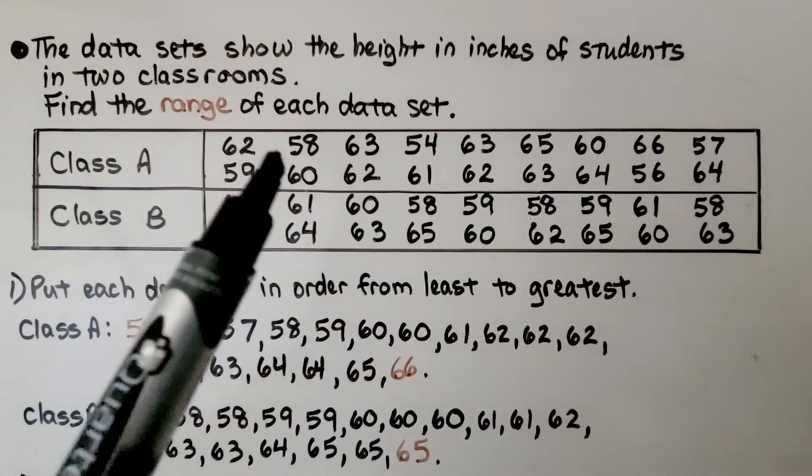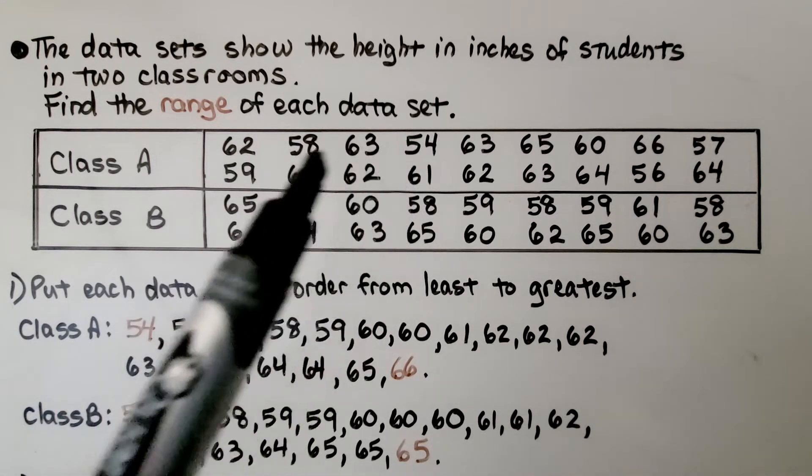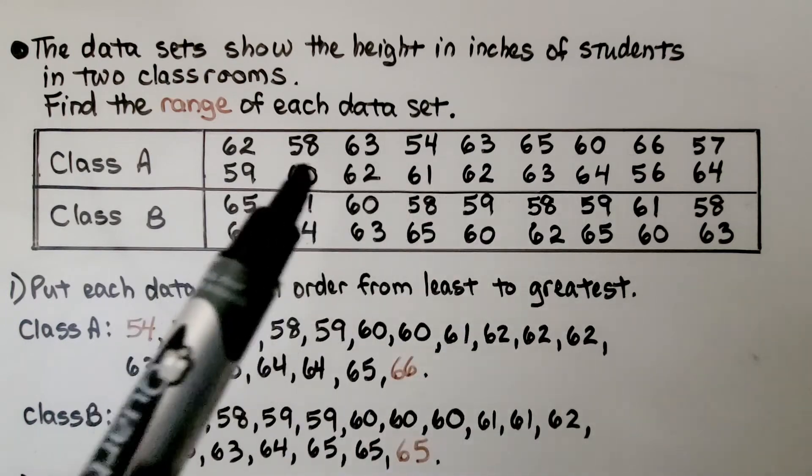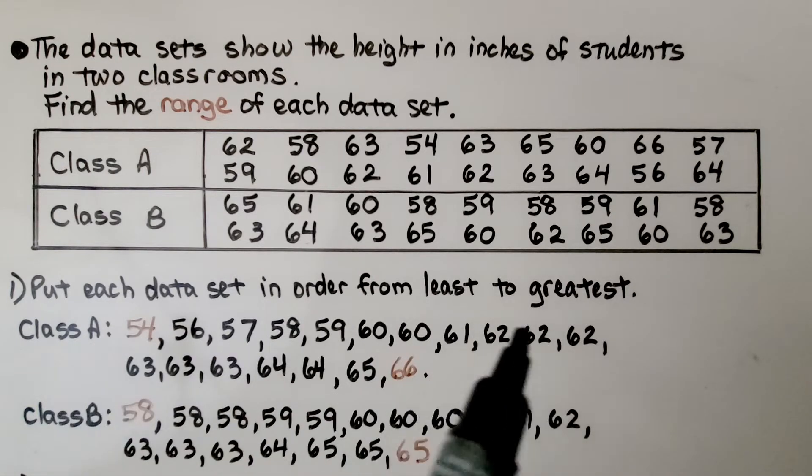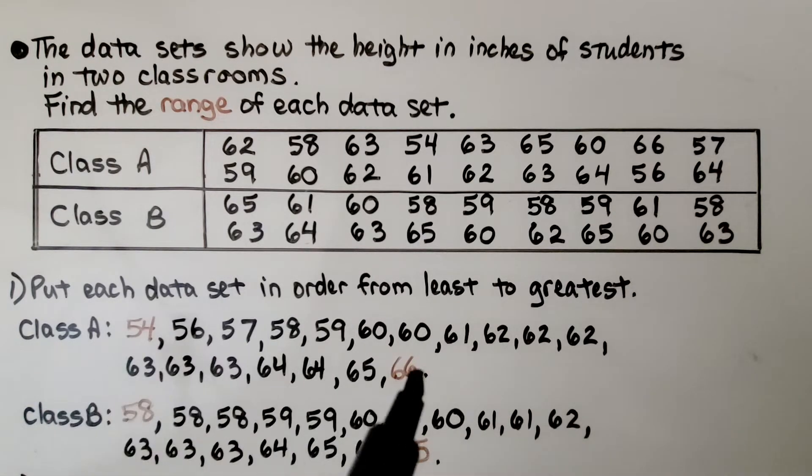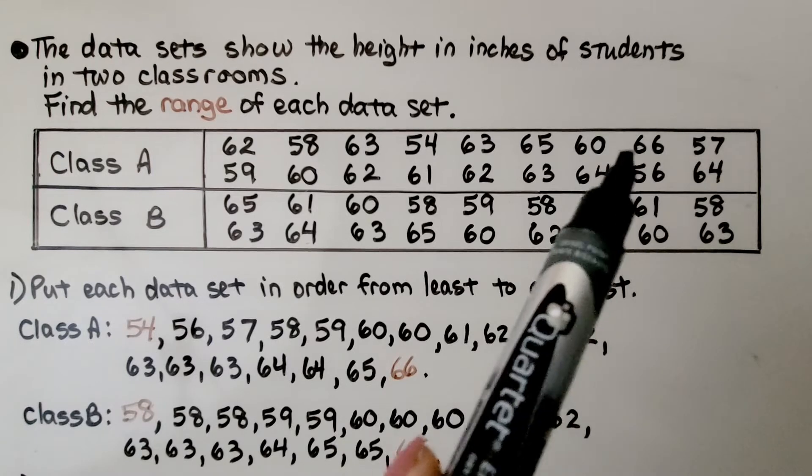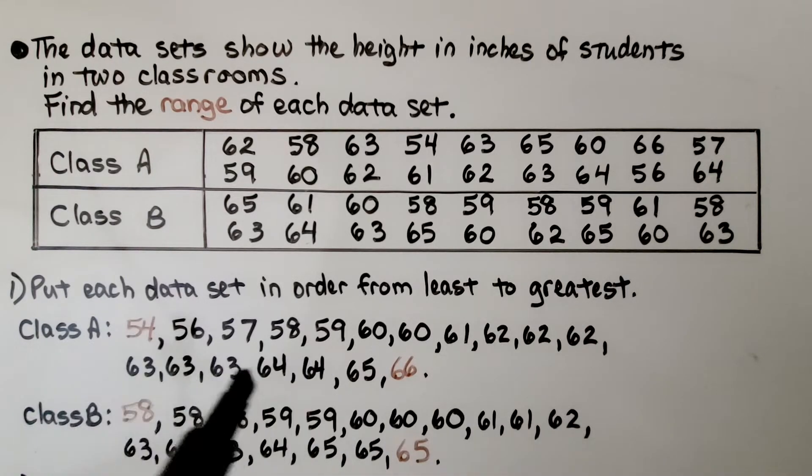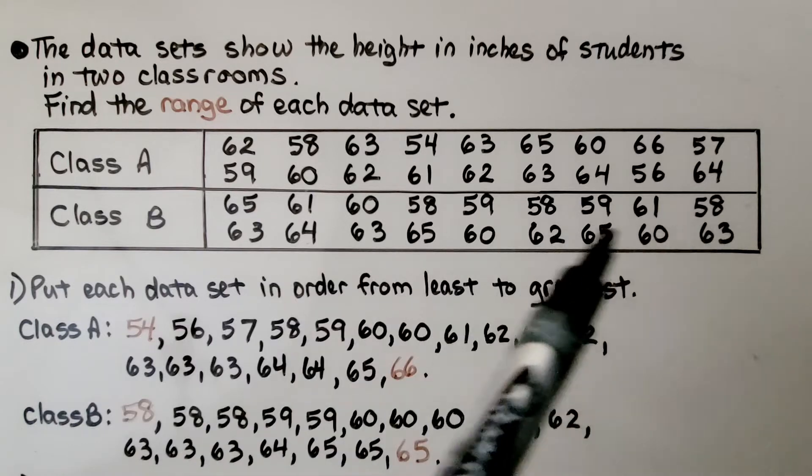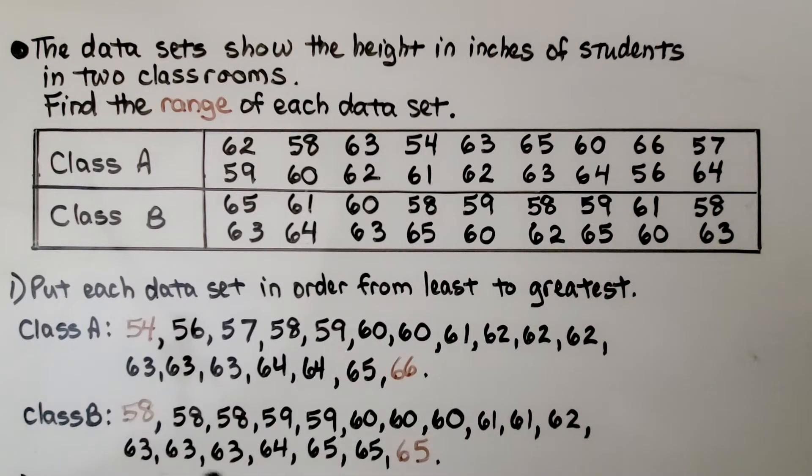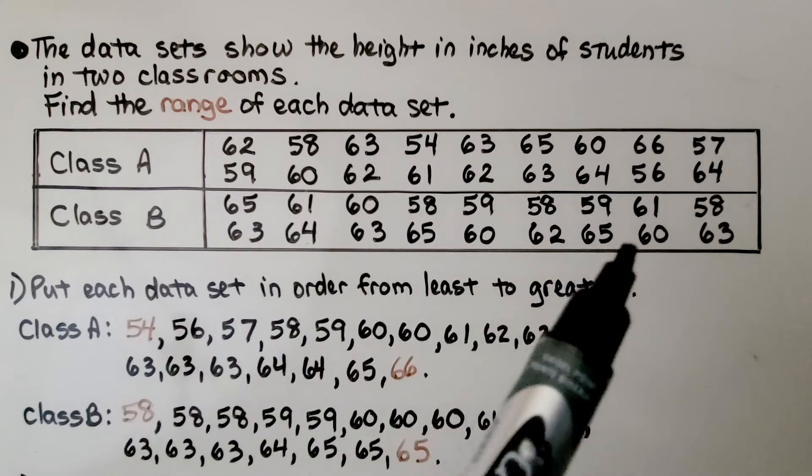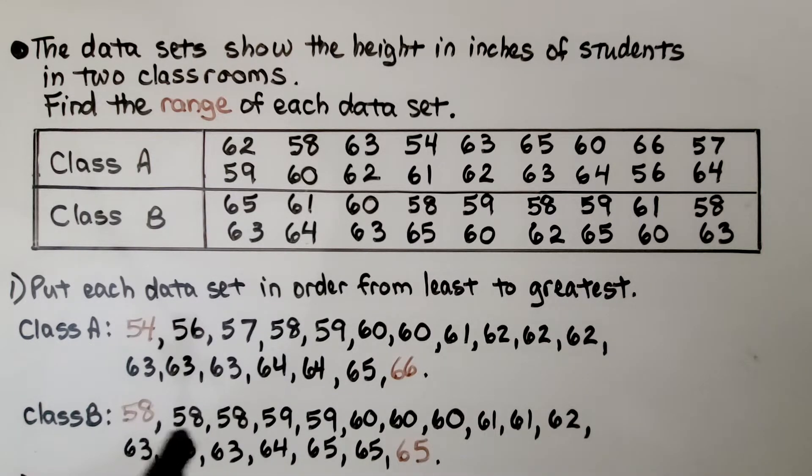For class A, the lowest number is 54. We can find all the numbers that start with a 50-something and slowly list them until the greatest number, which would be 66, and we have them in order from least to greatest. We do the same thing for class B. We look for the lowest number, that would be 58, and we can find the greatest number, that would be 65, and we put them all in order from least to greatest.